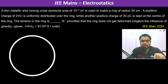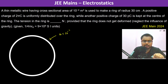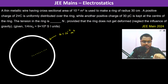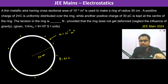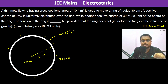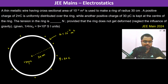A thin metallic wire having cross-sectional area A = 10⁻⁴ m² is used to make a ring of radius 30 centimeters. A positive charge of 2π coulombs is uniformly distributed on the ring. A positive charge of +30 picocoulombs is placed at the center of the ring. We need to find the tension in the ring.